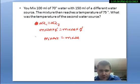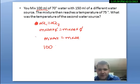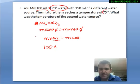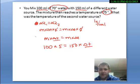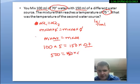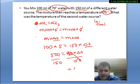For water source one: 100 milliliters of water equals 100 grams, since the density of water is one gram per milliliter. It starts at 70 degrees and finishes at 75 degrees, so the change in temperature is 5 degrees. That equals 150 grams of the second water source times its change in temperature. So 100 times 5 equals 500, which equals 150 times the change in temperature. Dividing both sides by 150: 500 divided by 150 equals 3.33 degrees Celsius.